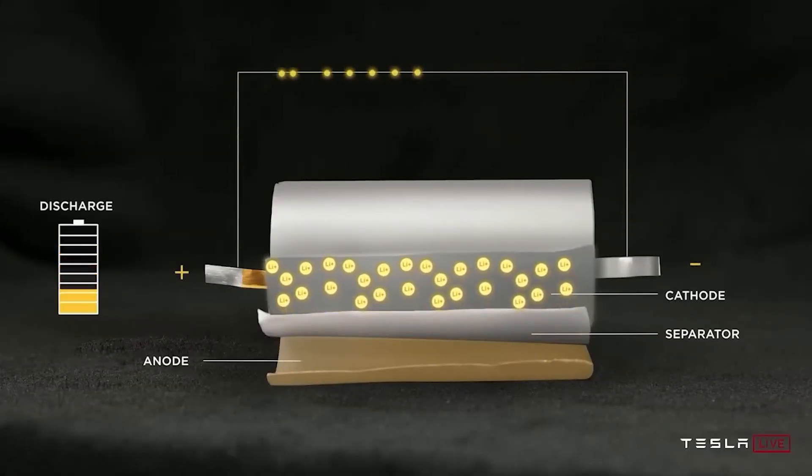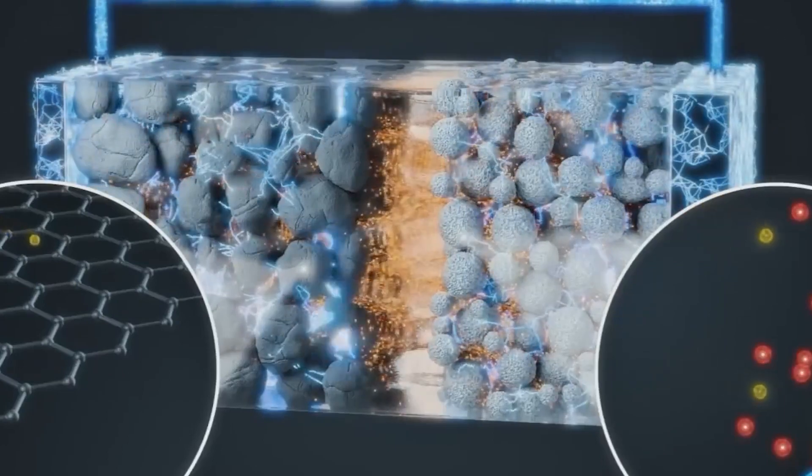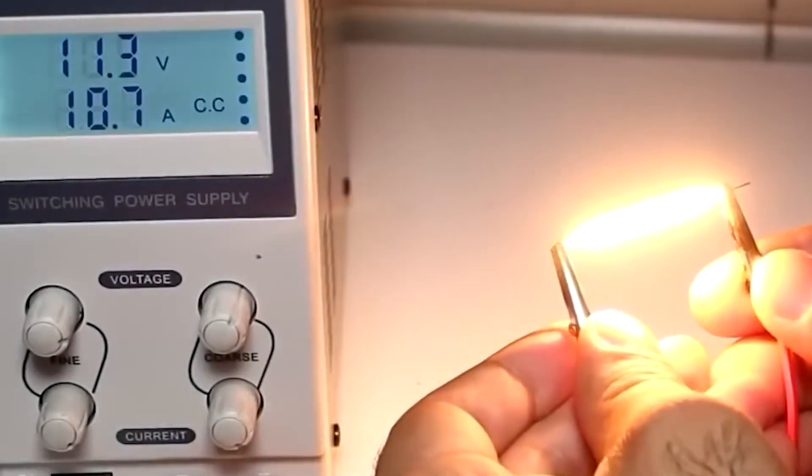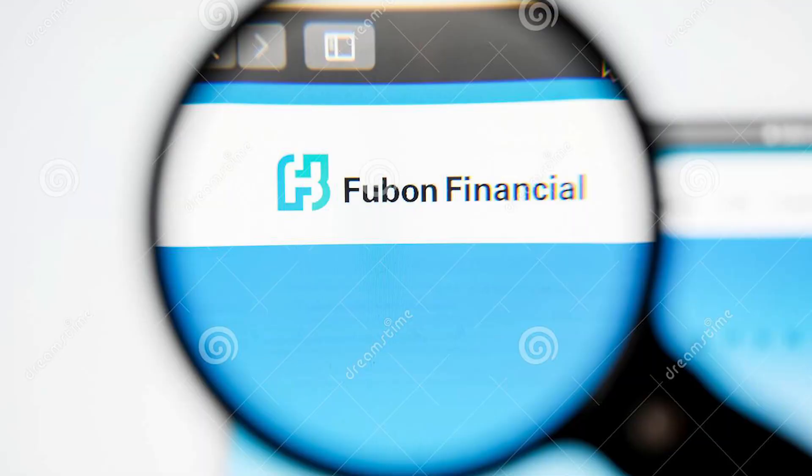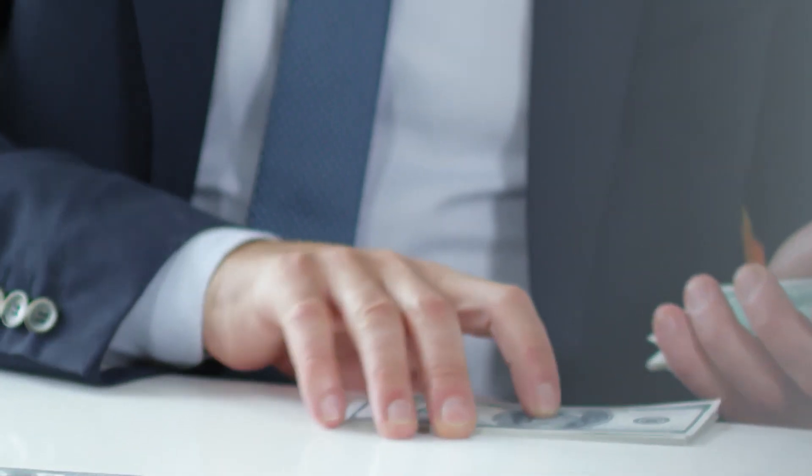However, other businesses are also intrigued by the concept of using graphene batteries to eventually power electric vehicles. Graphene enhanced batteries are being developed by Nanotech Energy for use in EVs and portable electronics. Fuban Financial Holding, a financial services corporation with headquarters in Taiwan, recently invested $64 million in the business.